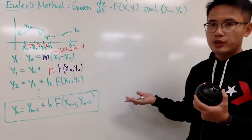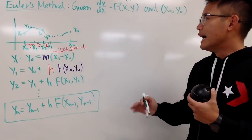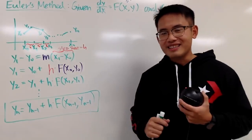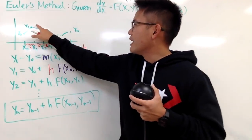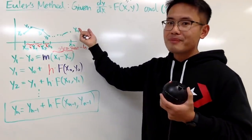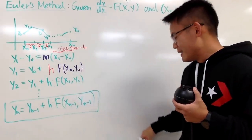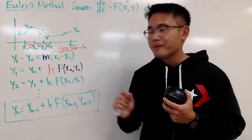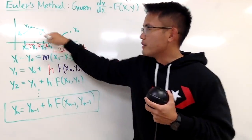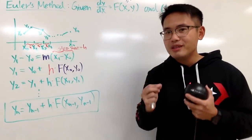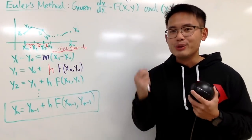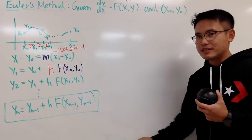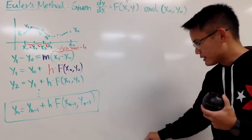Notice I don't know what exactly y of x is — maybe it's a curve like that. But if you keep h small enough, this polygonal line will be really, really close to the actual curve y of x. With that being said, let me demonstrate an example for you guys right now.